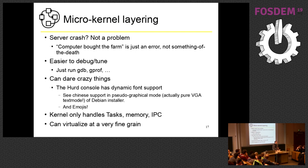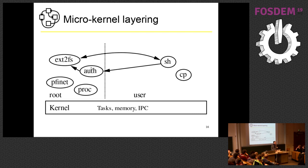This also provides virtualization at a really fine grain, because you can choose for each program which TCP/IP stack it will use, which root file system it will use, which notion of process it will use, which notion of user it will use. This is similar to Linux namespaces, except that here it's deep inside the structure of the Hurd. On Linux you might forget to separate sound support or network support — on the Hurd you cannot forget to compartmentalize things, because that's just the way it's done. There is no other way than having separations between processes.